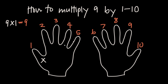If we bend down the second finger because we want to multiply 9 by 2, how many fingers do we have to the left and right? We just have the thumb — 1 finger on the left — and 8 fingers to the right. So 9 times 2 is equal to 18.